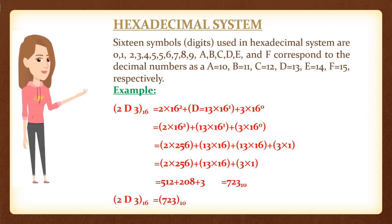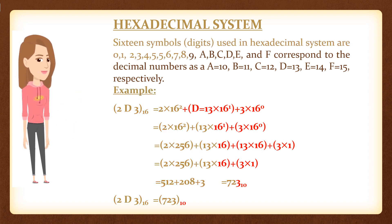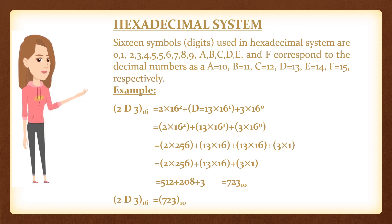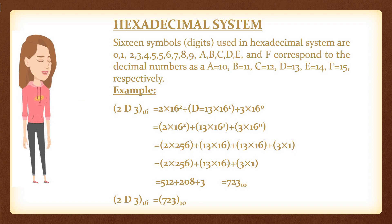Hexadecimal system. The 16 symbols (digits) used in the hexadecimal system are 0, 1, 2, 3, 4, 5, 6, 7, 8, 9, A, B, C, D, E, and F. These correspond to the decimal numbers as: A=10, B=11, C=12, D=13, E=14, F=15, respectively.